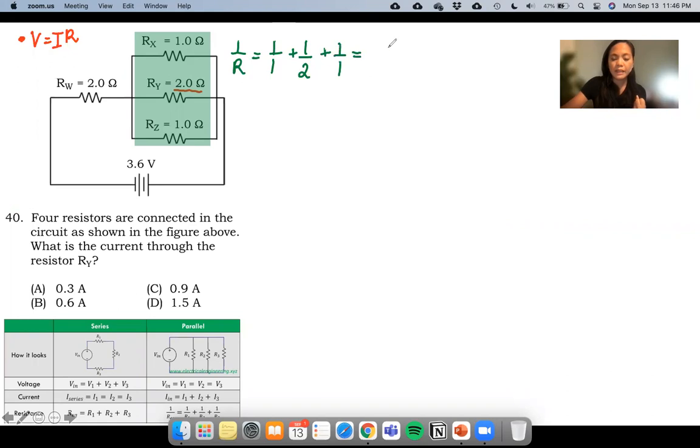And that is 2 over 2 plus 1 over 2 plus 2 over 2 or simply 5 over 2. So our total resistance is the reciprocal of this one, and that is 2 over 5.